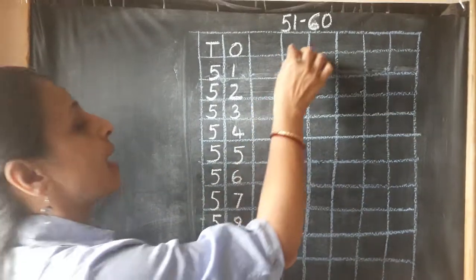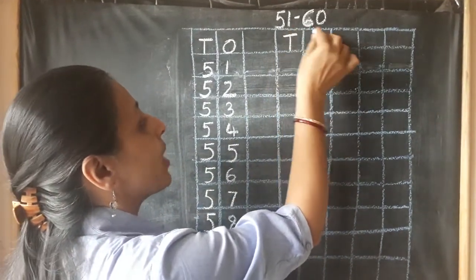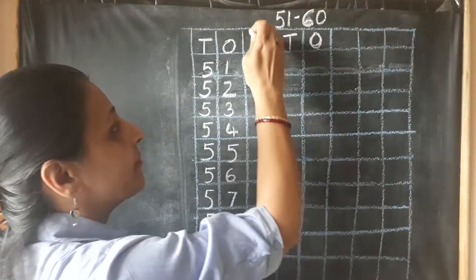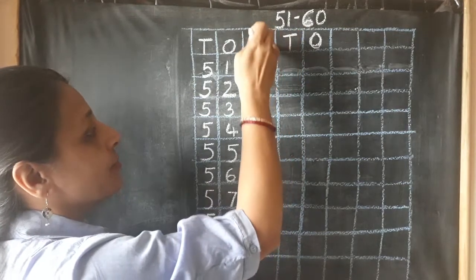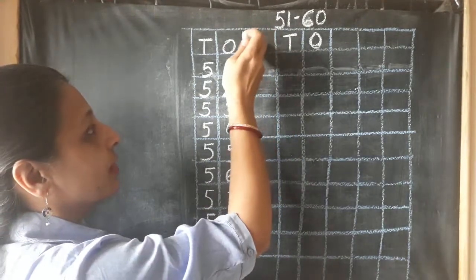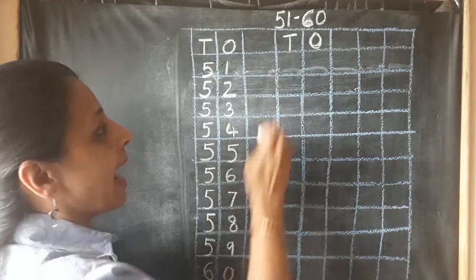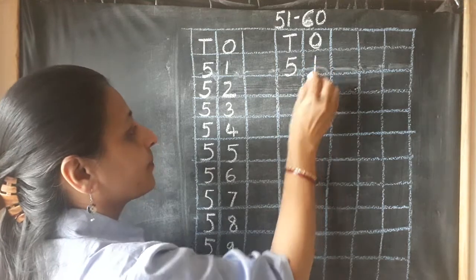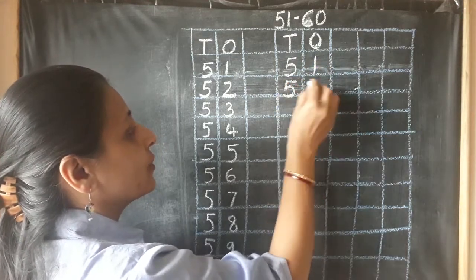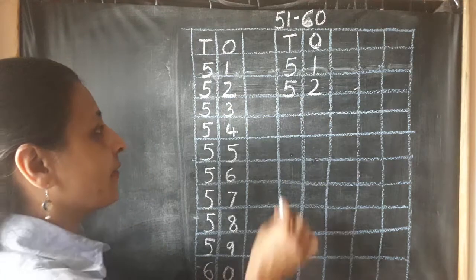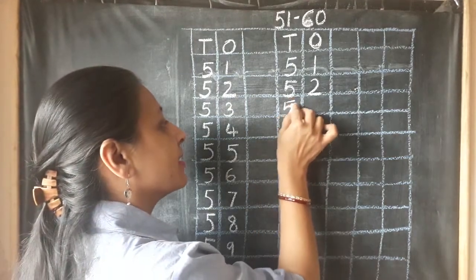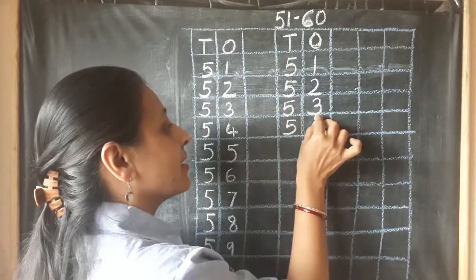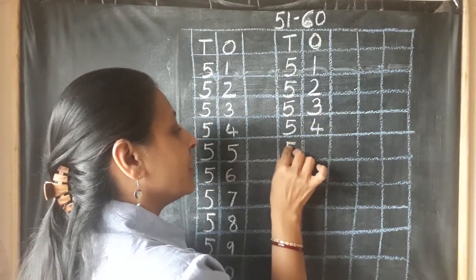The same way we are going to write once again 51 to 60. And every time whenever we write, we have to leave one box, one column and then we will write. 5, 1, 51. 5, 2, 52. What comes after 52? 5, 3, 53. 5, 4, 54.